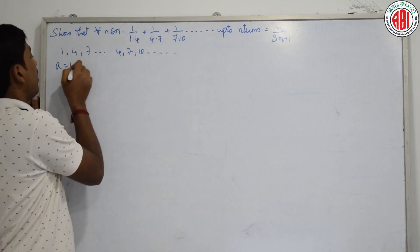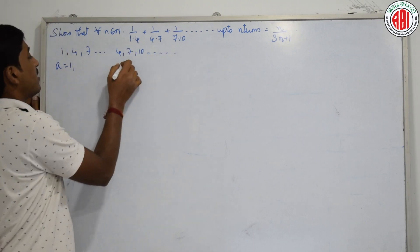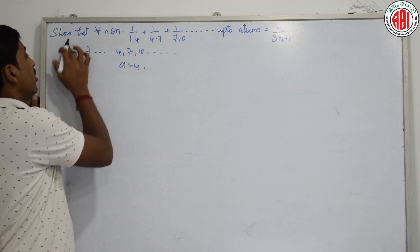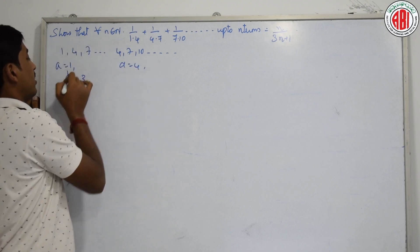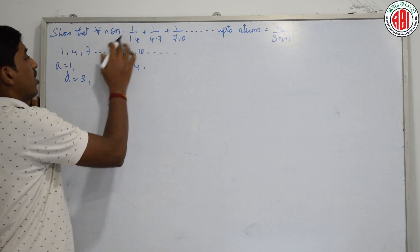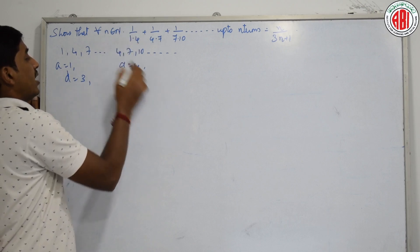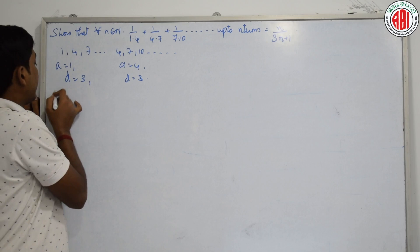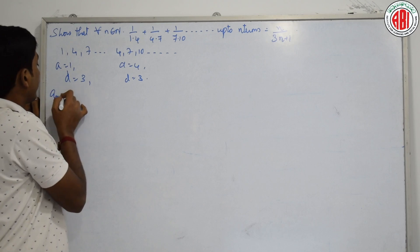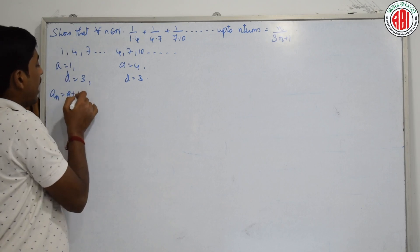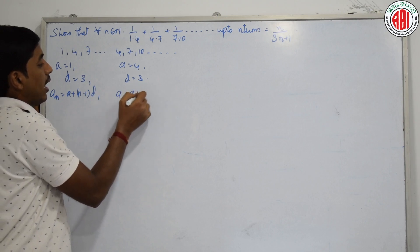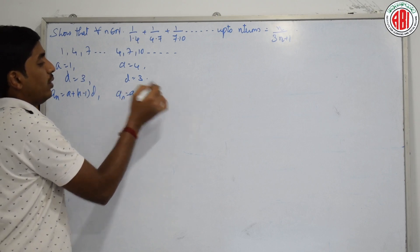The first term of the first AP is 1. The first term of the second AP is 4. The common difference is 4 minus 1, which is 3. The common difference of the second AP is 7 minus 4, which is also 3. The nth term is A plus (n minus 1) into D for both APs.